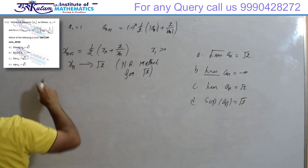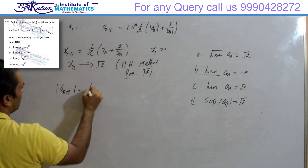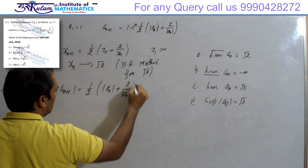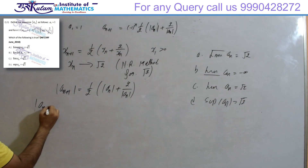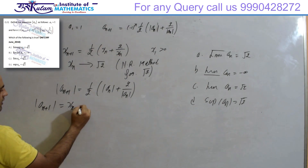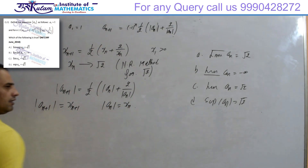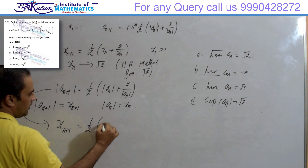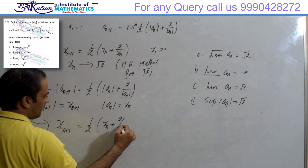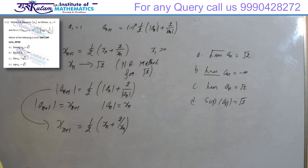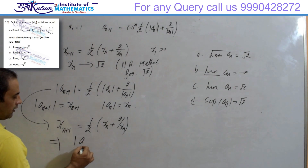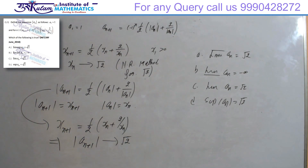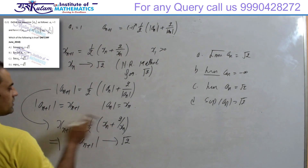Now if I write |a_{n+1}|, that becomes (1/2)(|a_n| + 2/|a_n|). If you replace |a_{n+1}| with x_{n+1} and |a_n| with x_n, the sequence becomes x_{n+1} = (1/2)(x_n + 2/x_n). So the conclusion is that |a_{n+1}| converges to √2, since it represents the same sequence.